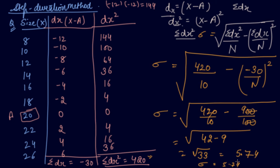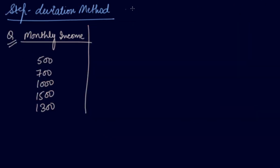The previous method — taking deviation from the assumed mean — was actually the shortcut method, the same way we used to calculate the mean. Now we will do the step deviation method. In the shortcut method you take deviation from the assumed mean; in the step deviation method, you also divide by a common factor.